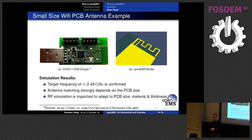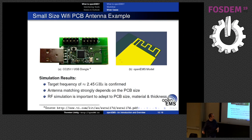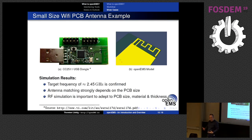For PCB antennas, here's a USB dongle from Texas Instruments modeled from its specifications. The PCB model uses only metal plates, but it confirms the target Wi-Fi frequency works and clearly shows that the antenna matching is highly dependent on PCB size. A matching network is therefore necessary, which is exactly why simulation is important.